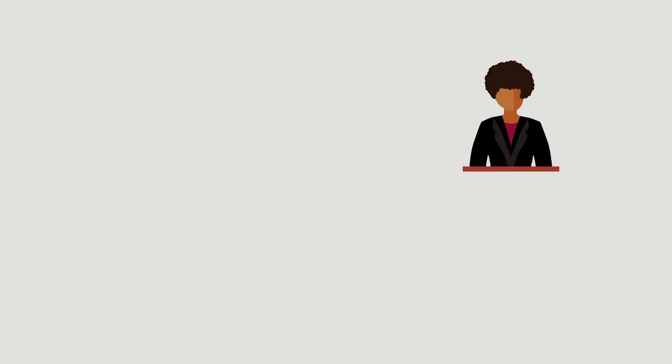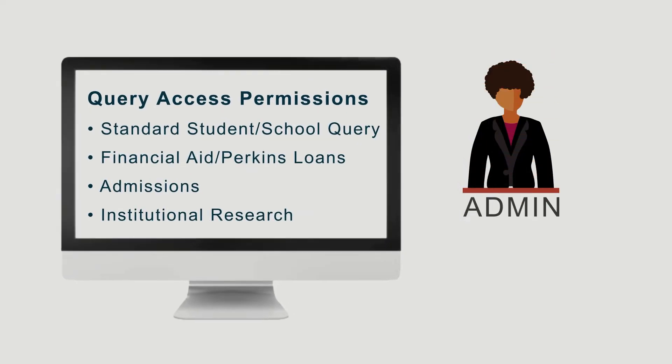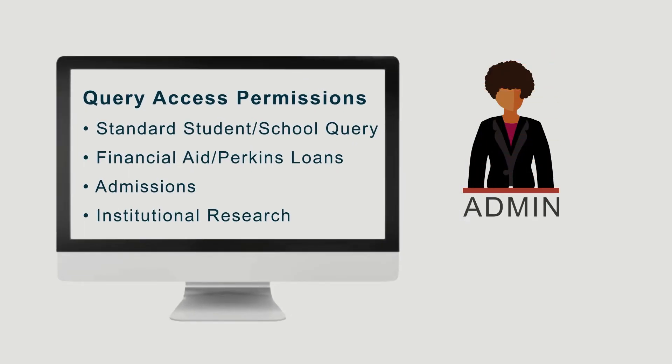There are also query access permissions that can be assigned to users. These allow a user to query individual students through single student search. The Clearinghouse recommends you align access to these permissions with the applicable policies of your institution.